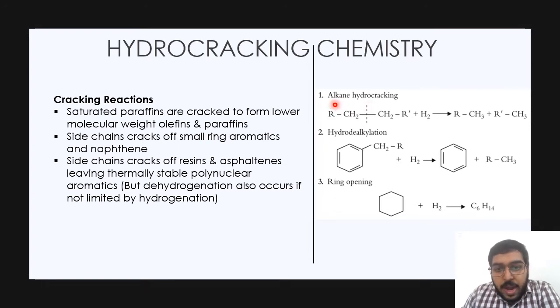Now let's look at alkane hydrocracking first. A very big alkane which is RCH2-CH2R prime when added with hydrogen breaks off. Then hydroalkylation occurs in which an aromatic hydrocarbon with addition of hydrogen gives off a very stable aromatic hydrocarbon and RCH3 goes off alone. Then ring opening happens when this is further hydrogenated, it opens the ring.